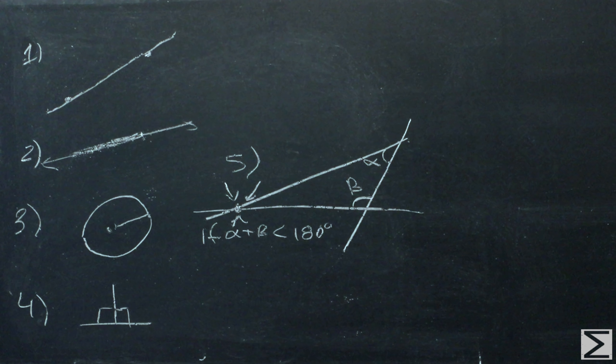Postulate five: if a straight line falling on two straight lines makes the interior angles on the same side less than two right angles, then the two straight lines, if produced indefinitely, meet on that side on which the angles are less than the two right angles.